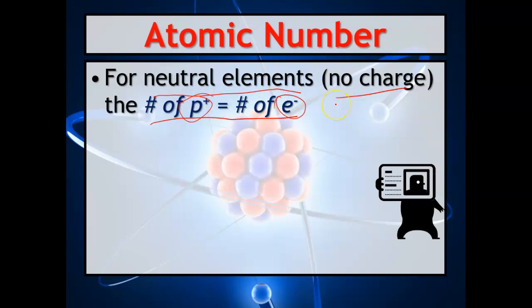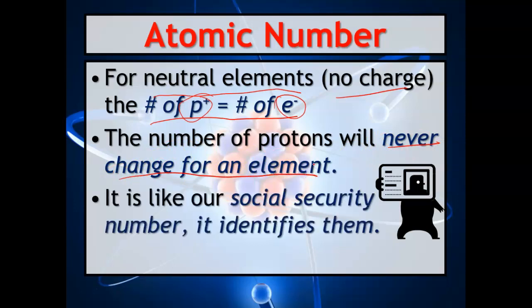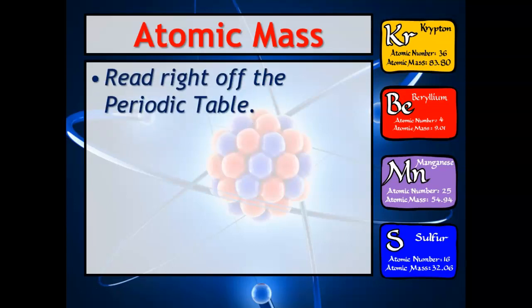So they are equal. The number of protons will never change for an element. The electrons might, but the protons will never. It is like our social security number—it identifies them, just like your ID number at school.